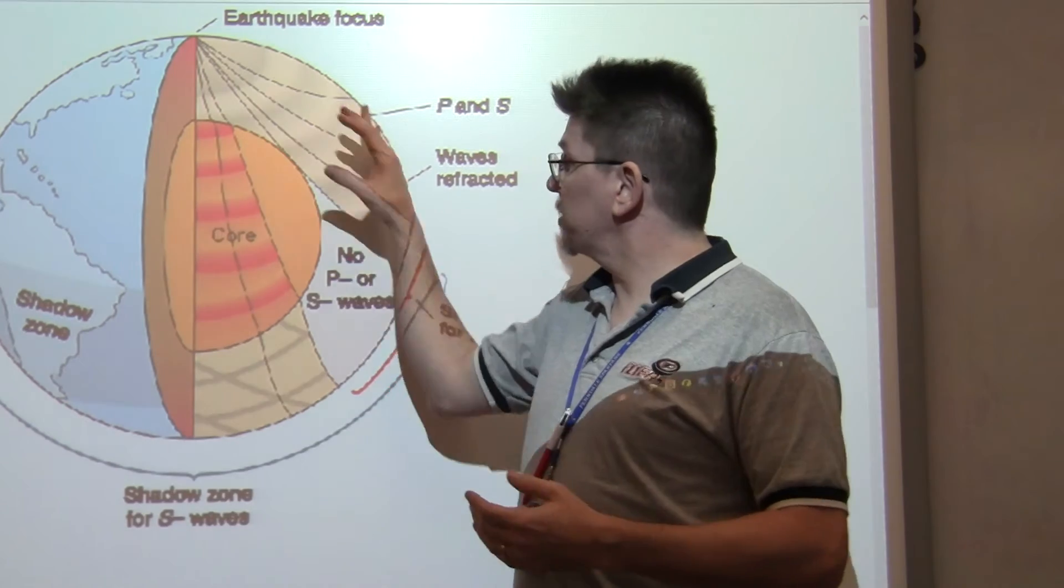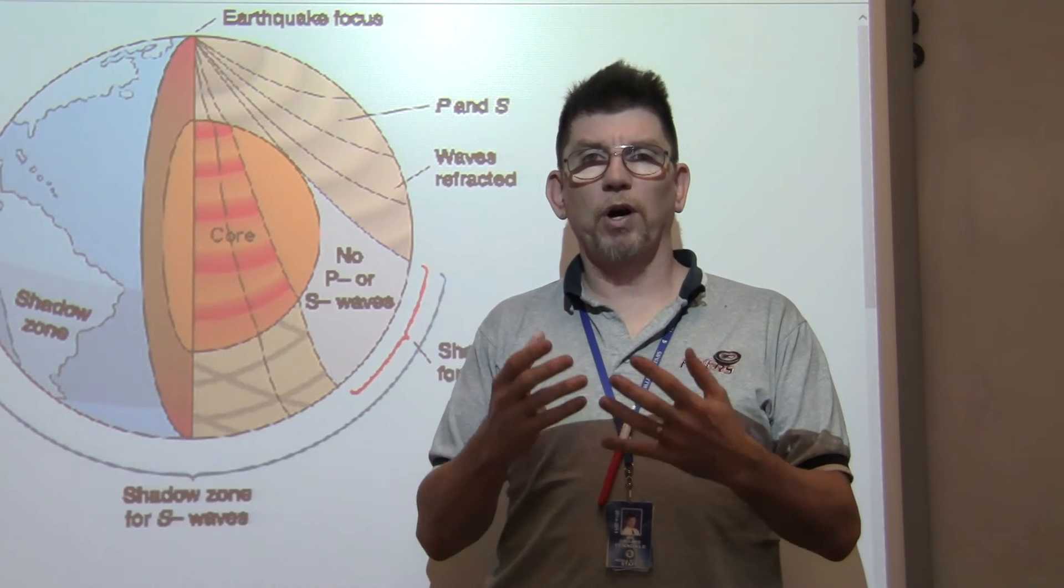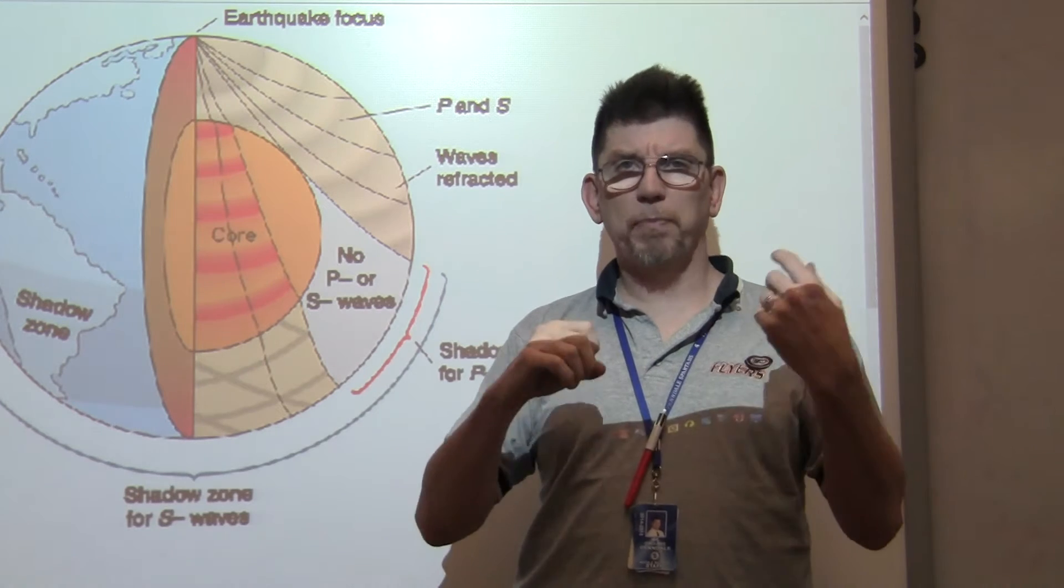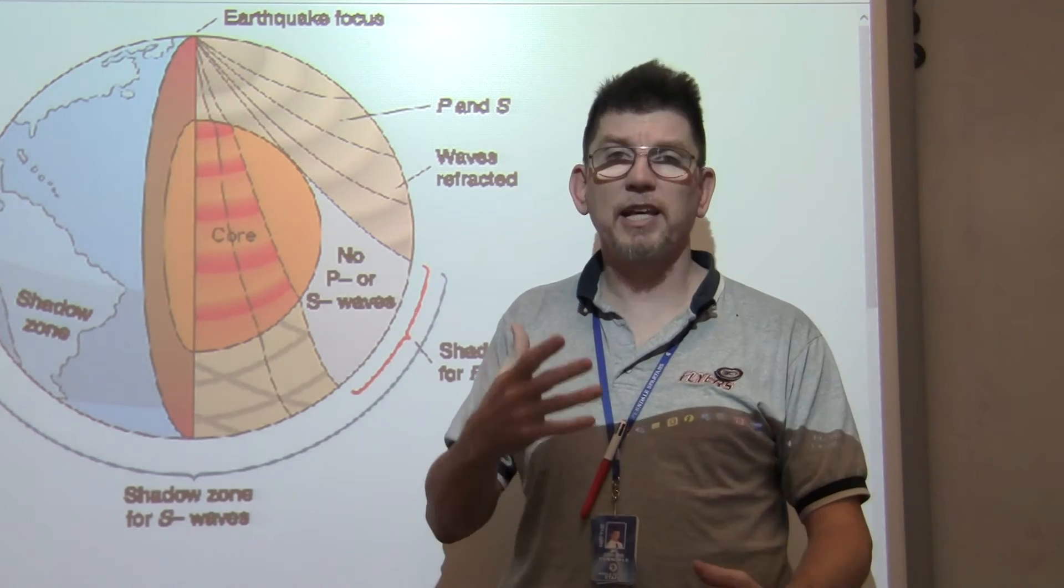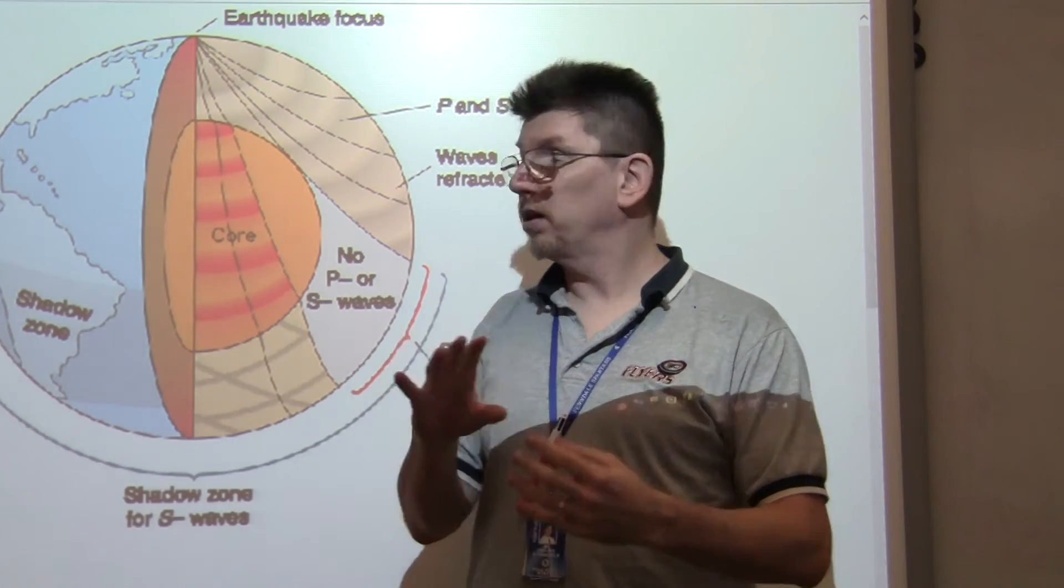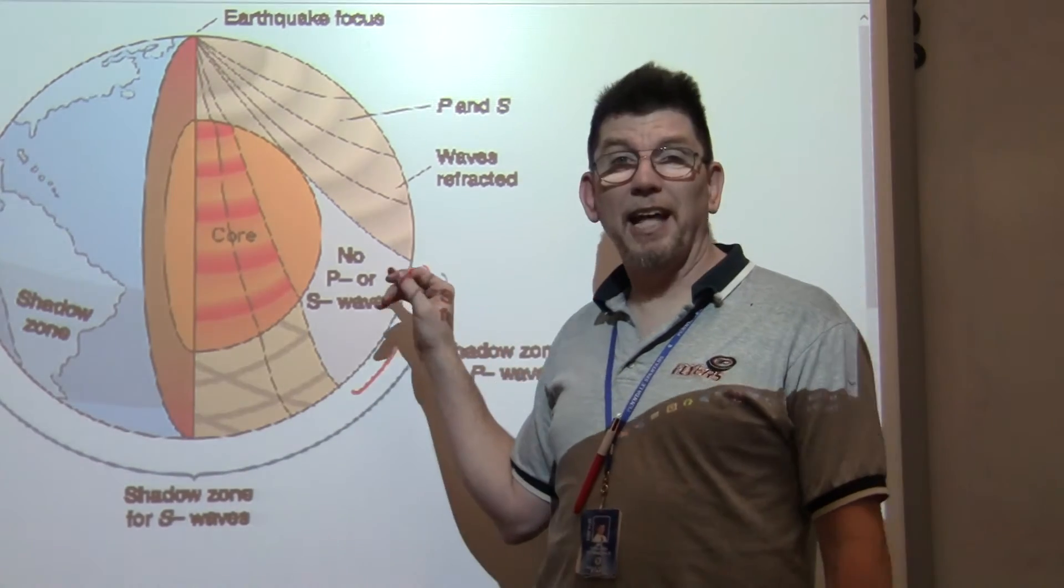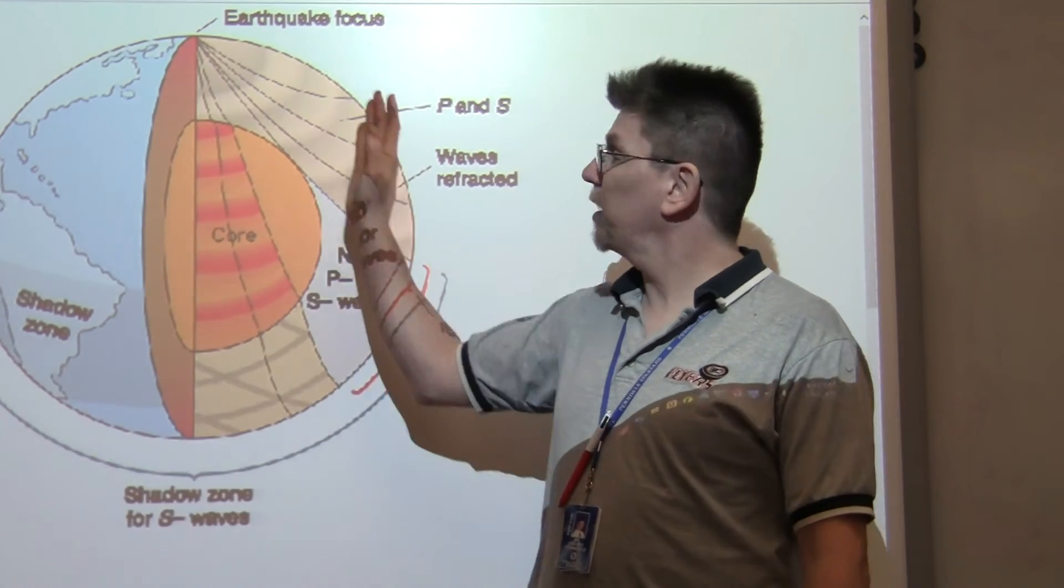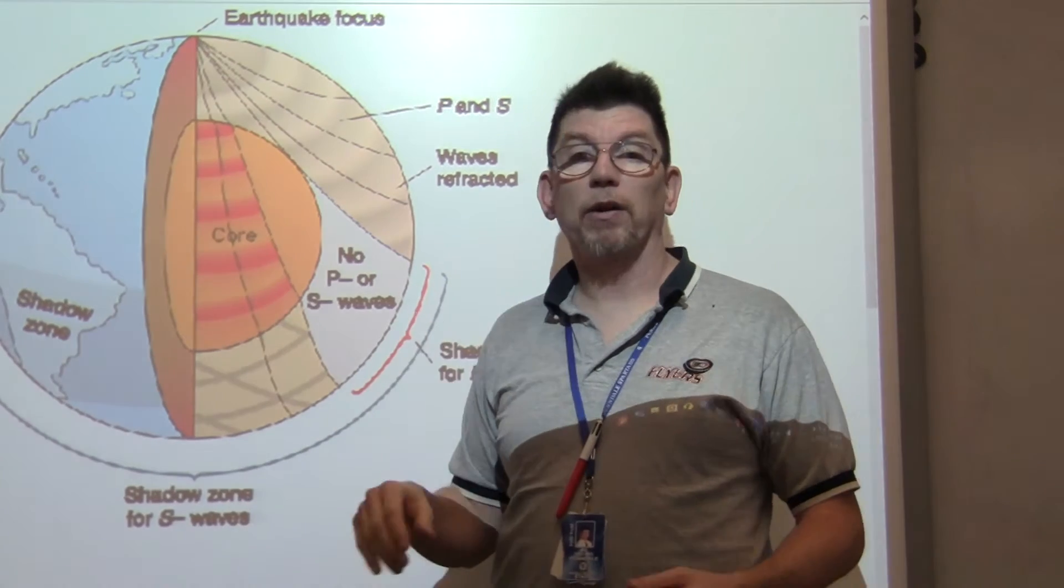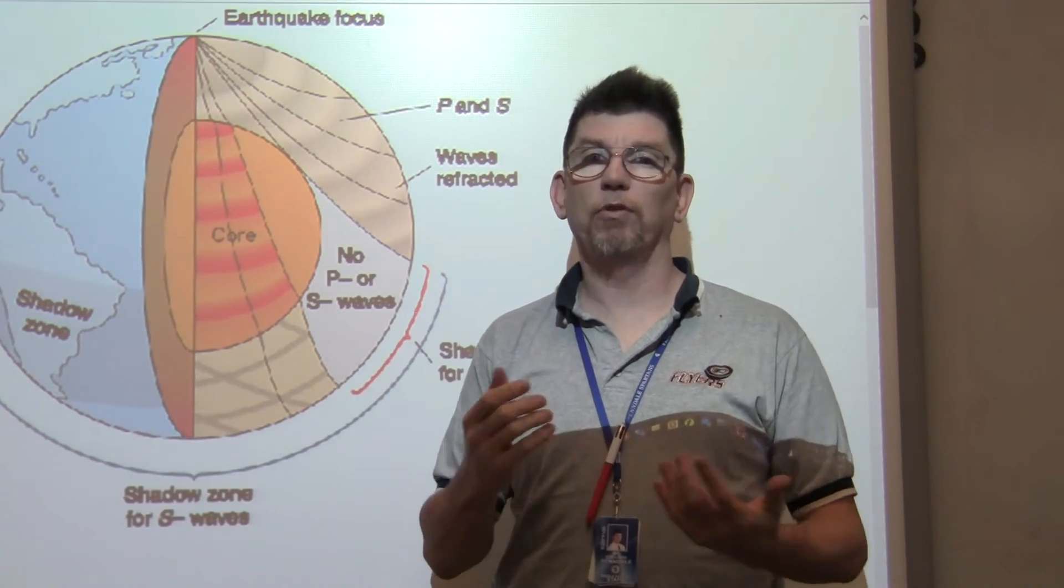Earthquake recording stations all over the world record these things. At some point, we noticed that there was something missing. There were two main types of earthquake waves. P waves, primary waves, are the first waves to get there. And then there's secondary waves, a little bit slower, have a different type of motion. Well, this part of the world wasn't getting any S waves at all, but everywhere else was. Scientists inferred that they were hitting a liquid barrier. P waves can move through it, but S waves cannot move through a liquid.